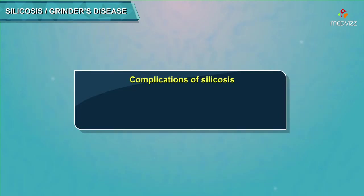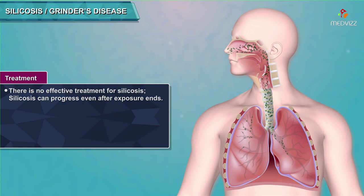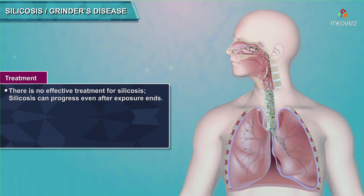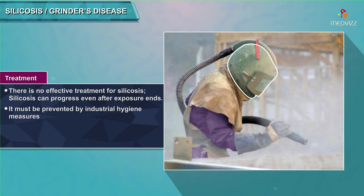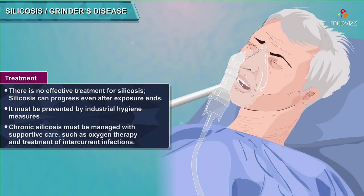Complications of silicosis include cor pulmonale (Caplan syndrome), and increased risk for developing lung cancer and tuberculosis. There is no effective treatment for silicosis; it can progress even after exposure ends and must be prevented by industrial hygiene measures. Chronic silicosis is managed with supportive care, such as oxygen therapy and treatment of intercurrent infections.